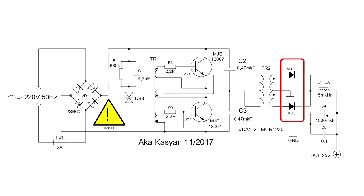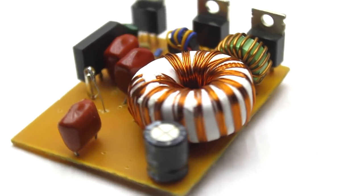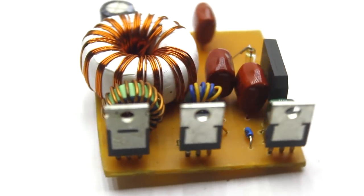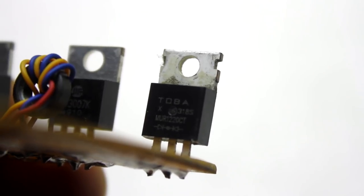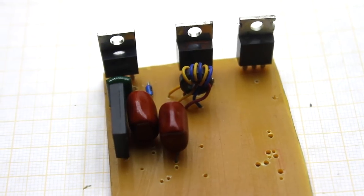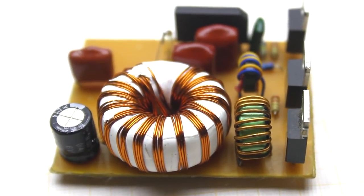To save diodes and useful space on the PCB was chosen rectifier with midpoint. The dual diode assembly in the housing TO220 has a reverse voltage of 200 volts at a current of 12 Ampere. The diodes can be only 45 volts, but preferably more current.